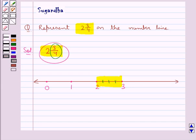Now 3 upon 4 means 3 parts out of the 4 parts. So out of these 4 equal parts we select the 3 parts, which is this portion, and so this point would represent the number 2 and 3 upon 4.